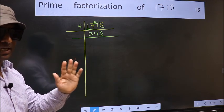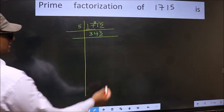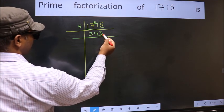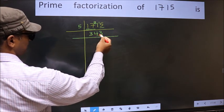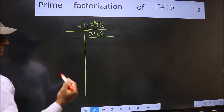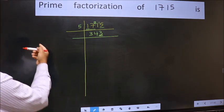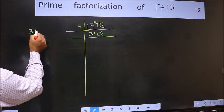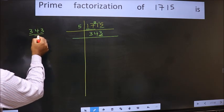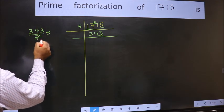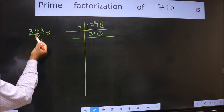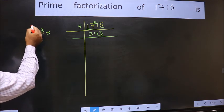Next, prime number 5. The last digit is neither 0 nor 5, so this is not divisible by 5. Next, prime number 7. Let us check divisibility by 7 here. A number close to 34 in the 7 table is 7×4=28.